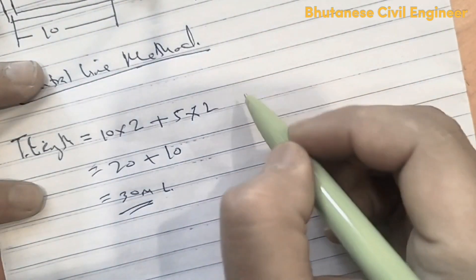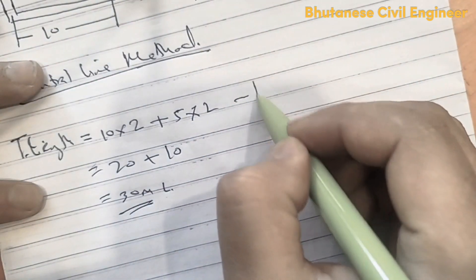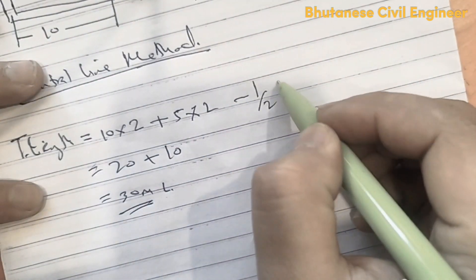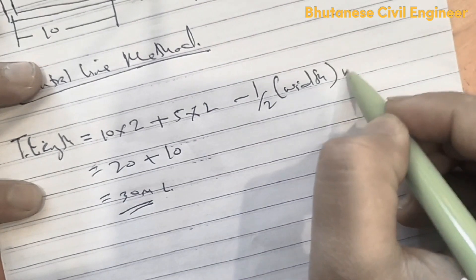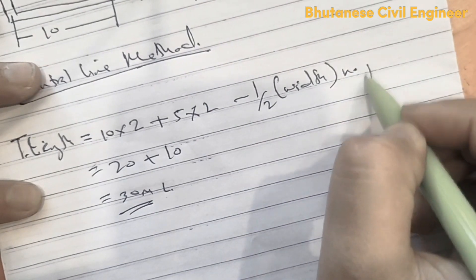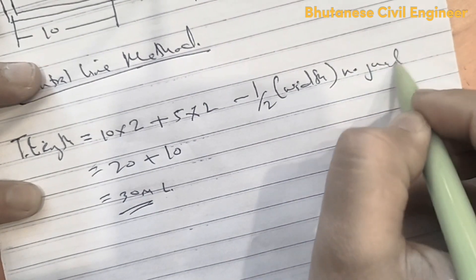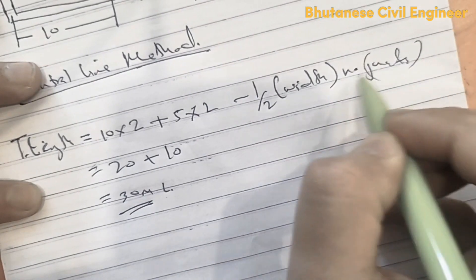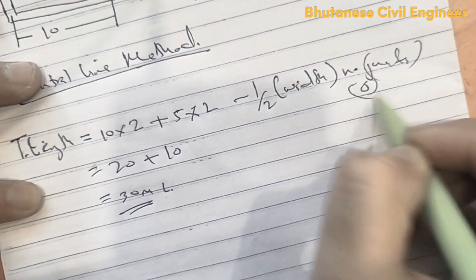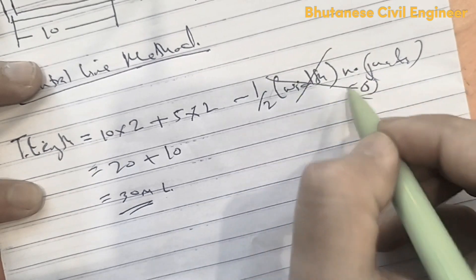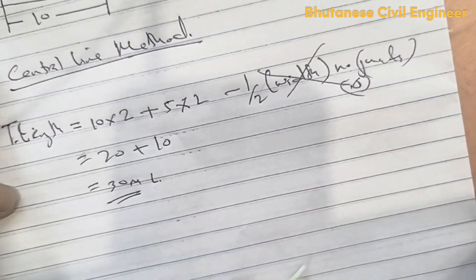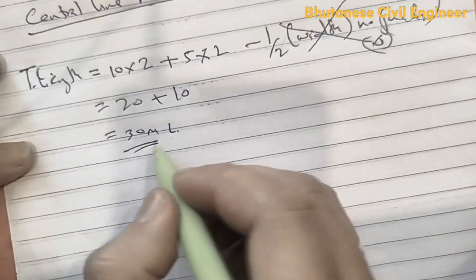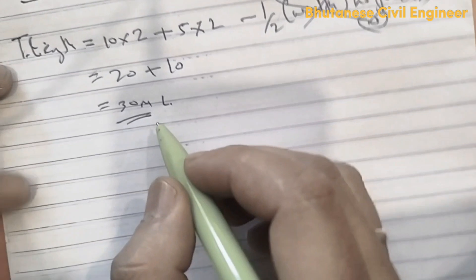And the junction window — the formula is width multiplied by the number of junctions. The junction is 0, so the junction window is 0, so the link is 0, and L is 0.